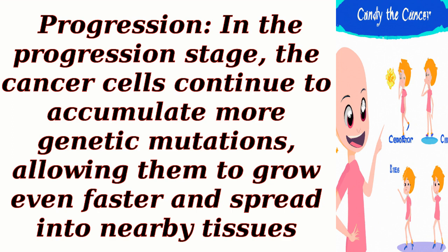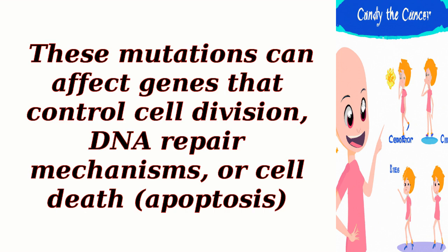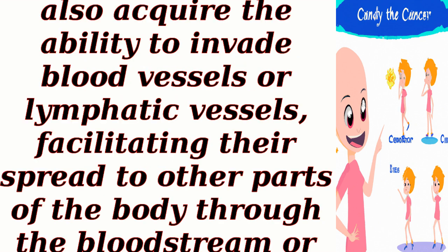In the progression stage, the cancer cells continue to accumulate more genetic mutations, allowing them to grow even faster and spread into nearby tissues. These mutations can affect genes that control cell division, DNA repair mechanisms, or cell death (apoptosis). Cancer cells can also acquire the ability to invade blood vessels or lymphatic vessels, facilitating their spread to other parts of the body through the bloodstream or lymphatic system.